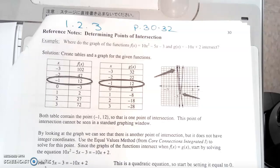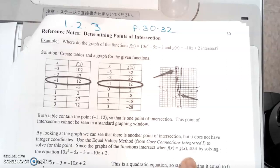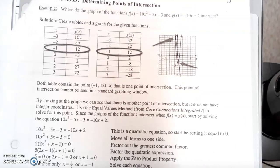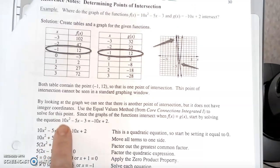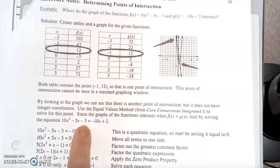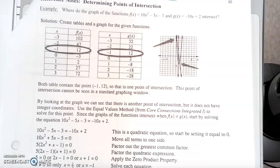Since the graph of the functions intersect when the two equations are equal to each other, when you take f of x and set it equal to g of x, start by solving the equation 10x squared minus 5x minus 3, set it equal to the other expression negative 10x plus 2.